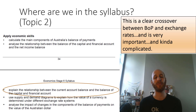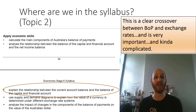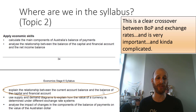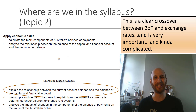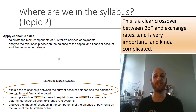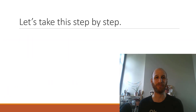Where are we in the syllabus? We're now looking not at a content dot point, but at one of the economic skills dot points. You can see here that we're asked to explain the relationship between the current account balance and the balance of the capital and financial account. This point is a pretty clear crossover between the balance of payments and exchange rates. It's very important, and it's kind of complicated. So let's take this step by step.